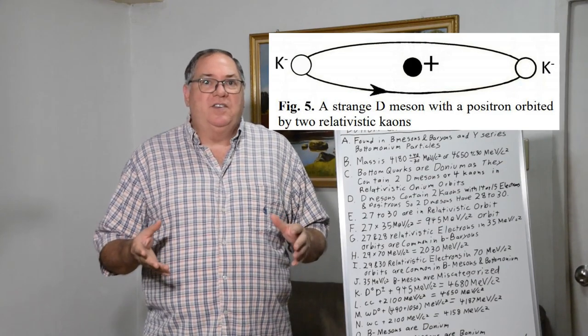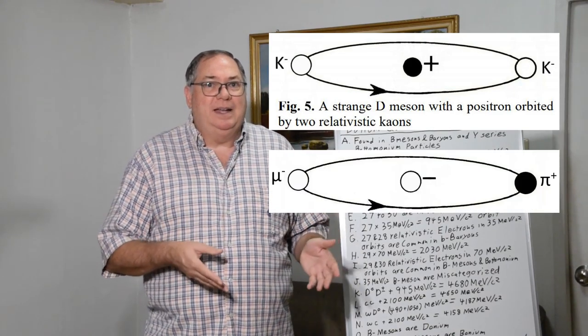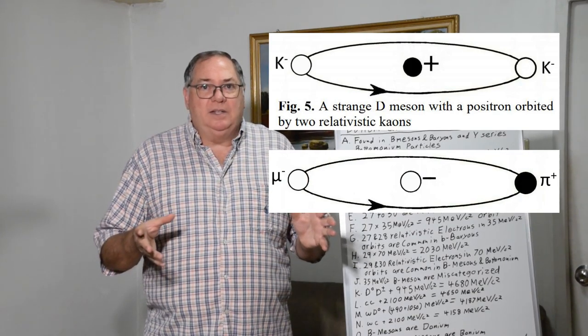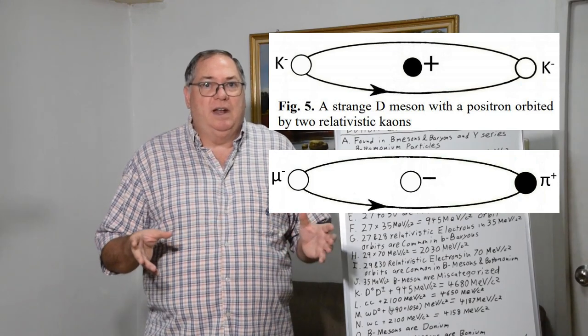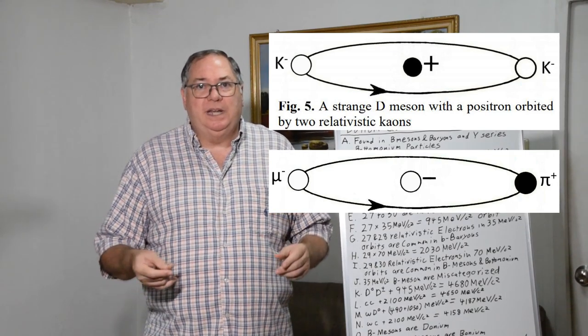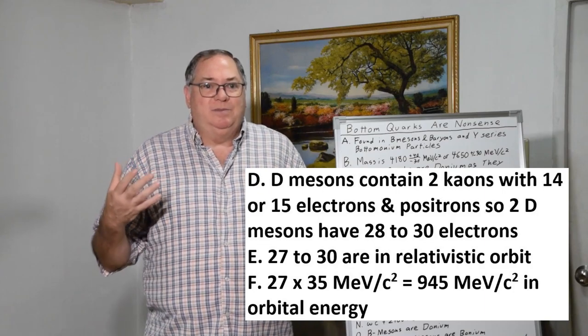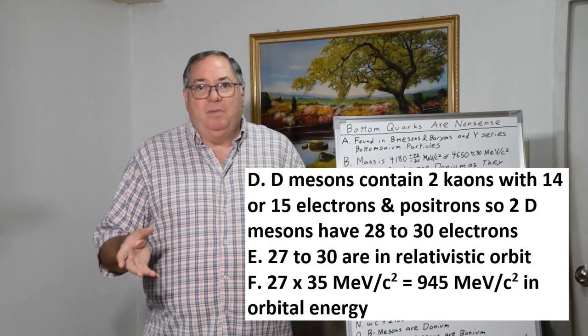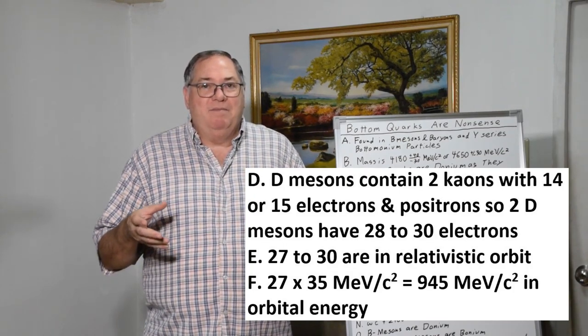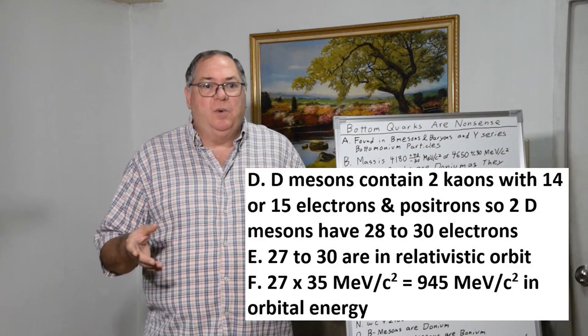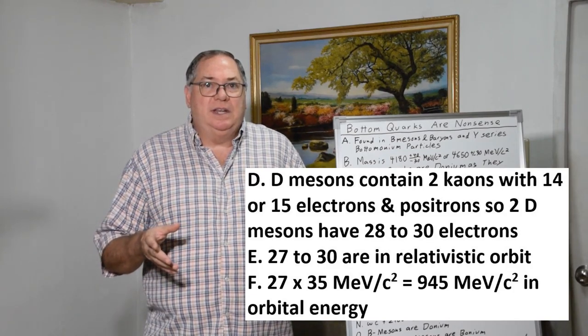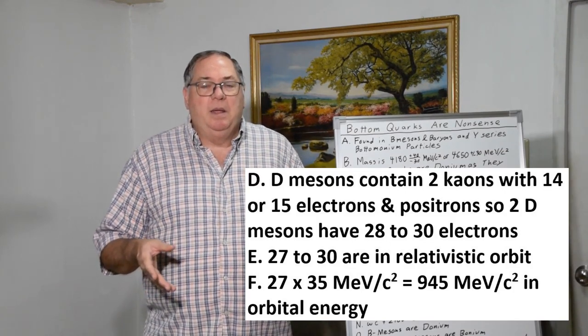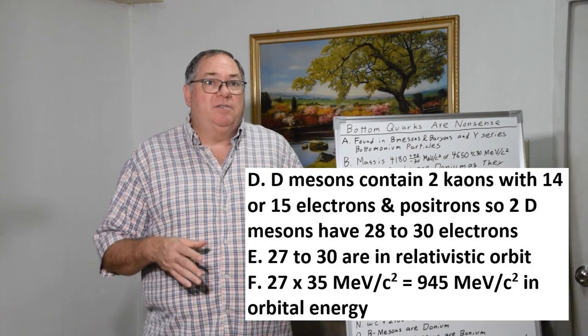Each of the D mesons contains two kaons, and each kaon contains two pions. The kaons, if you have two pions orbiting a central electron that's 7, so 7 plus 7 is 14. 14 plus 14 gives you 28, but the kaons can be orbiting a central electron giving you 15.